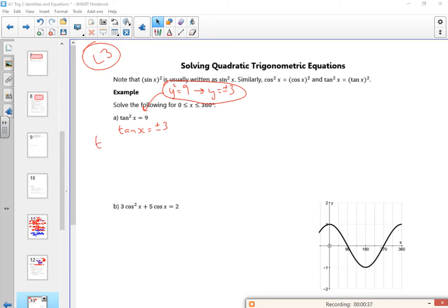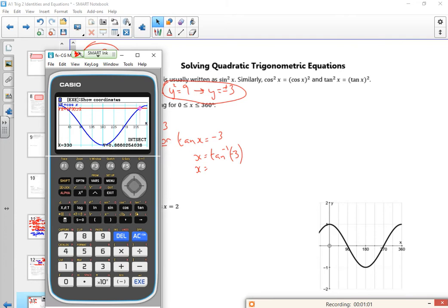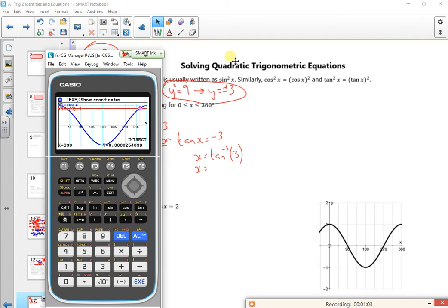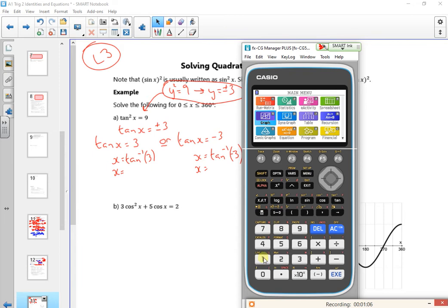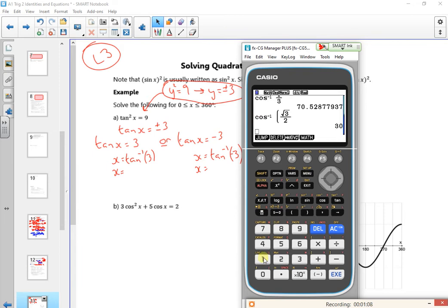So I know that tan x is plus or minus 3. I've got two options: I've got tan x is 3, or tan x is minus 3. So if I look at the inverse tan of both of these, I'll do them side by side because I'm going to get the answers to them both as I go. So menu one.